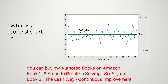There is a central line which is the average line, this is the upper control limit, and this is the lower control limit. All these data points should lie between these two control limits to say that the process is in statistical control.